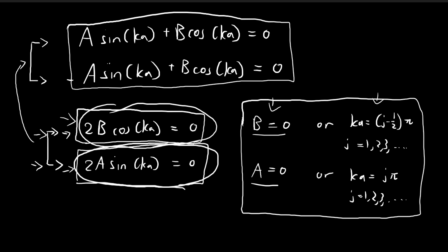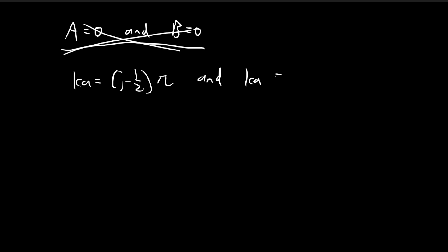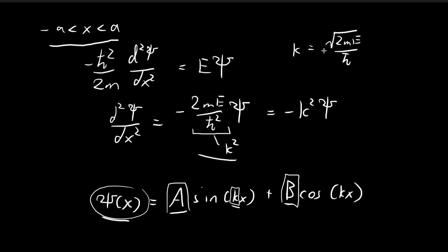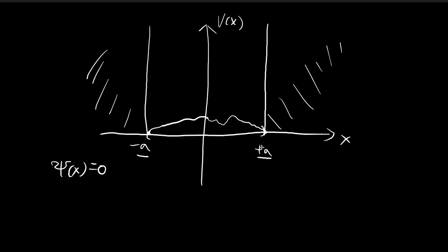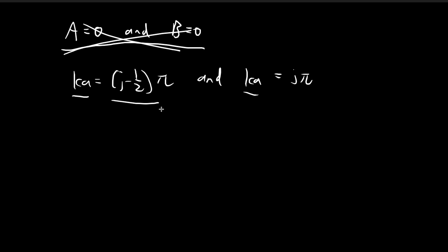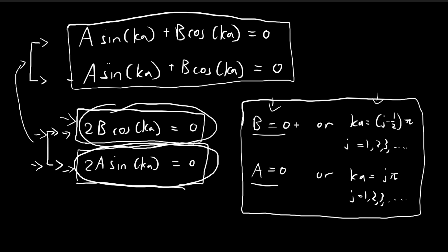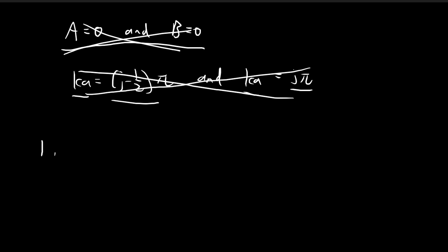Another candidate is ka = (j − 1/2)π and ka = jπ simultaneously. While the cosine term would vanish for the first and the sine term for the second, ka is a single constant — it can't equal two different values at once. This is a logical contradiction, so this choice also doesn't work. We're left with two valid diagonal choices.